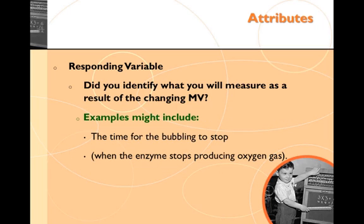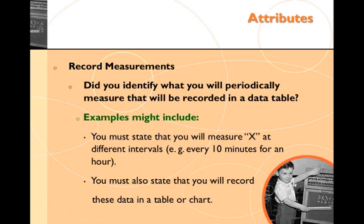The responding variable is what you measure. Did you identify what you're looking for? So an example might be you're measuring for the time for the bubbling to stop. Did you identify what you will periodically measure? So you have to state specifically that you will measure X at different intervals. For example, in this case, you would measure the time it takes for the bubbling or the foaming of the peroxide to stop. And you also have to state that you will record that, and typically we record data in either a data table or a chart.